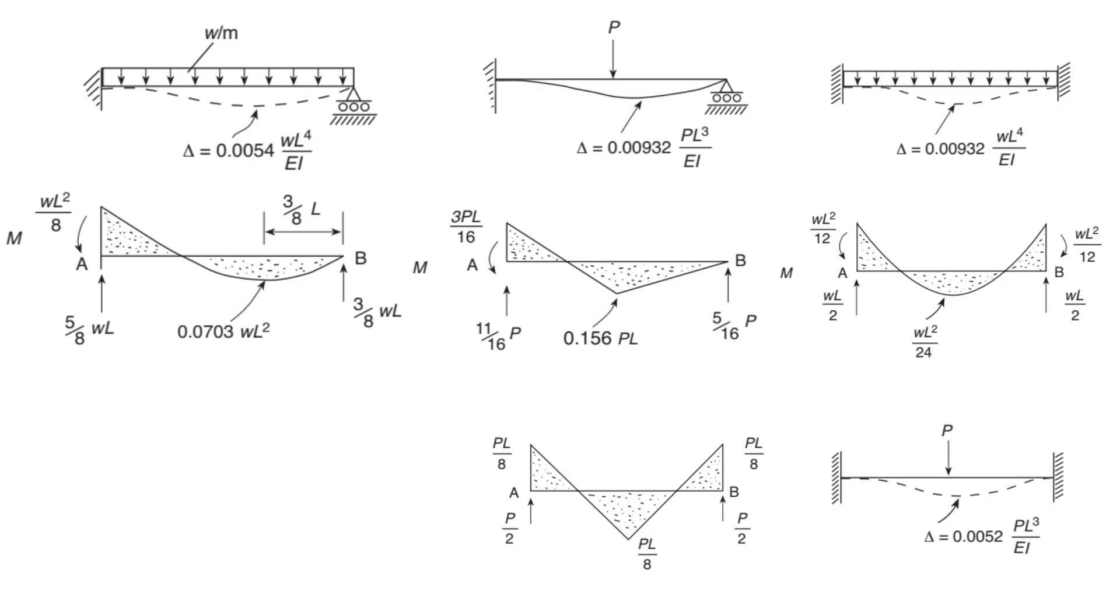Remember, uniformly distributed loads often result in curved bending moment diagrams, while point loads produce straight lines. These fundamental rules persist even in indeterminate structures.